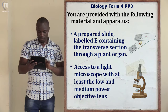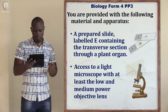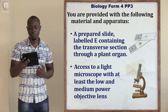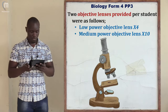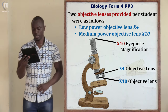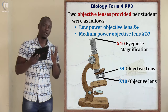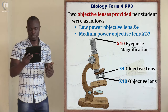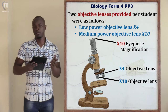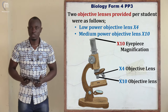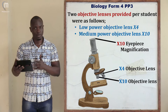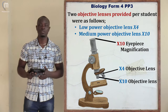The next part of the question says you should be given access to a light microscope with at least a low power and a medium power objective lens. The low power objective lens was ×4 and the medium power objective lens was ×10. The eyepiece magnification was also ×10.